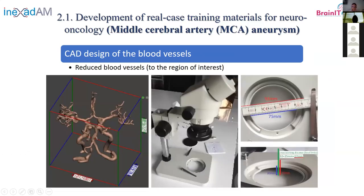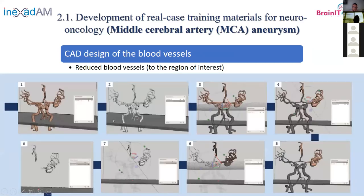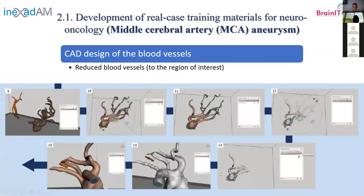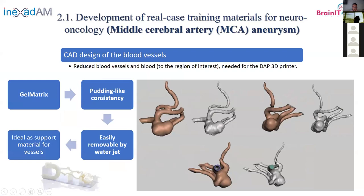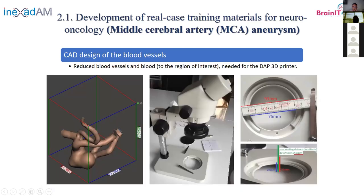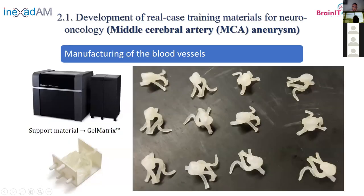We did all the features in the software. Since the students were going to work under the microscope, the full vessel size was too large, so we focused on the region of interest and did cut features to obtain the final models. To 3D print this, we had to provide the tubes and the blood inside the tubes because the Digital Anatomy printer uses a very innovative gel matrix support material — like a gel with padding-like consistency, easily removable with water. We produced this with the specified dimensions and here you can see all the replicas printed with the Digital Anatomy printer.